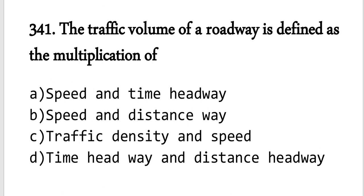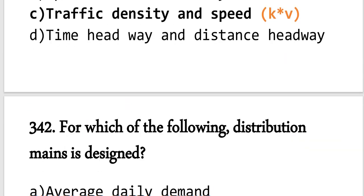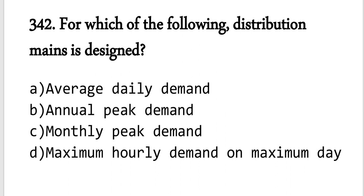Question number 341: Traffic volume of a roadway is defined as the multiplication of traffic density and speed — k into v gives traffic volume. Option C is correct.